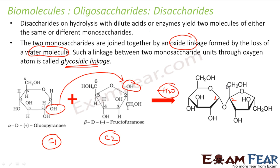Pay attention: the OH on carbon C1 of glucose and the OH on carbon C2 of fructose combine to form this glycosidic linkage — that is the C1–C2 bond between glucose and fructose in sucrose.